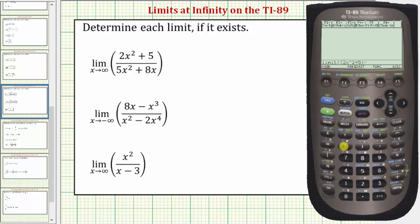close parenthesis, divided by open parenthesis 5x raised to the power of 2 plus 8x, close parenthesis, comma, the variable which is x, comma, because x is approaching positive infinity,